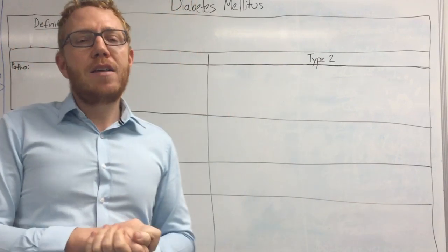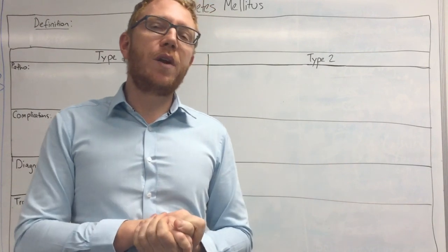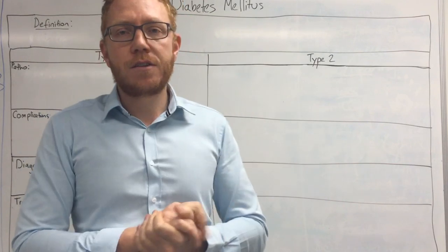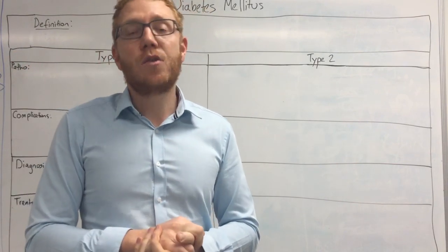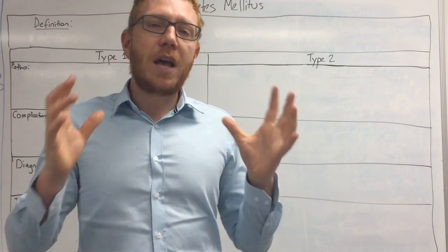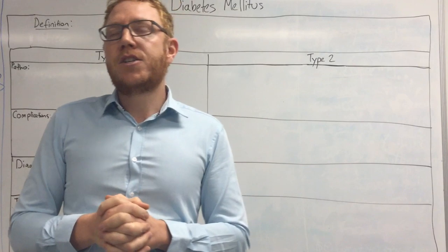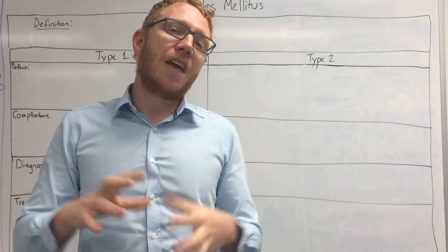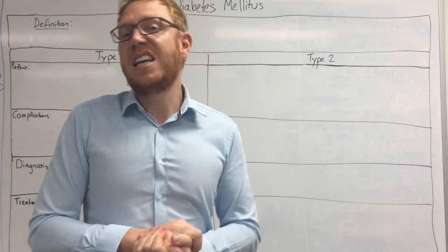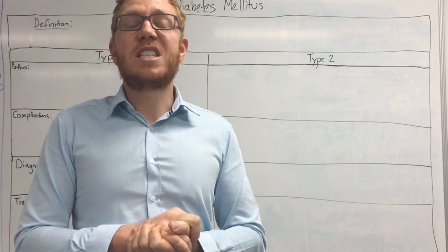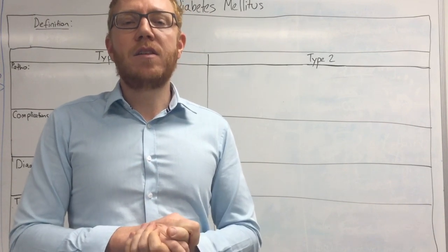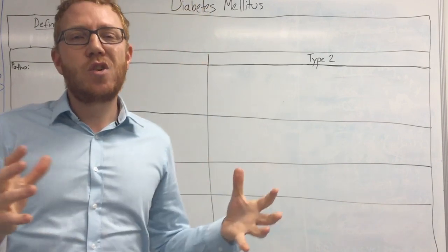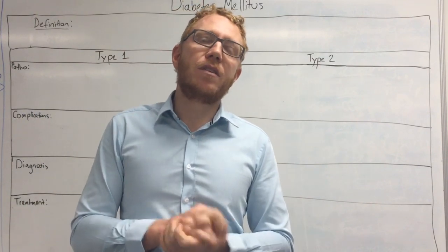Looking at the global burden: approximately 220 million people in the world currently have some form of diabetes mellitus, and that's expected to increase to around 300 million by 2020. In countries like Australia, it contributes to about the sixth leading cause of death, and approximately seven percent of the Australian population have diabetes mellitus.